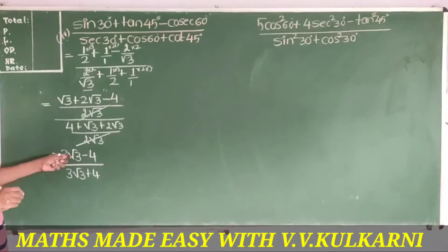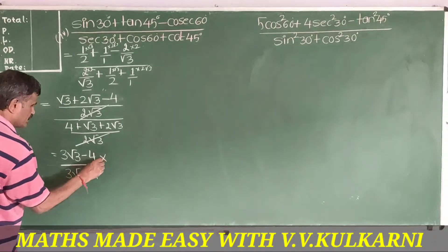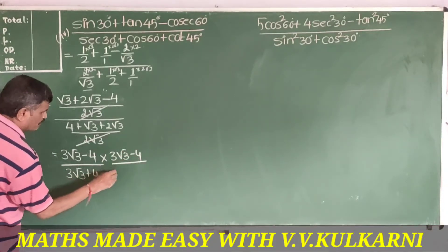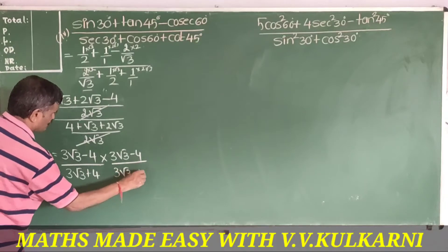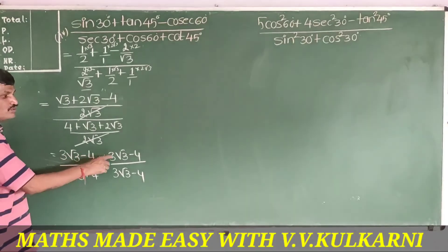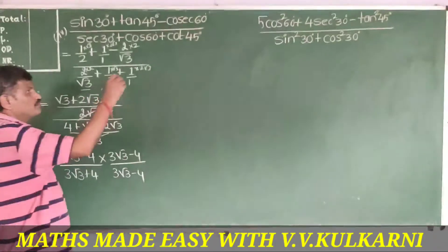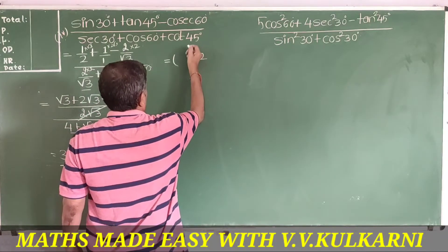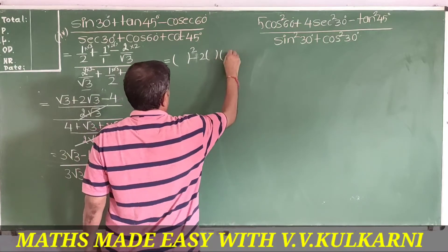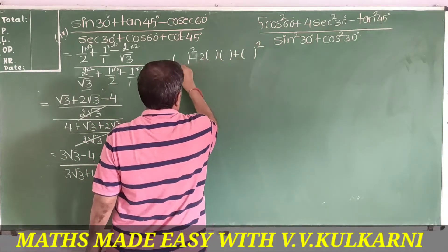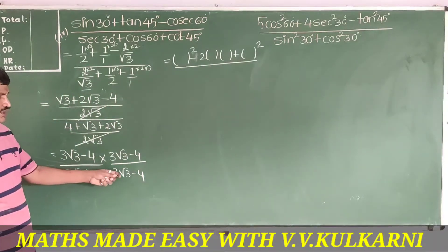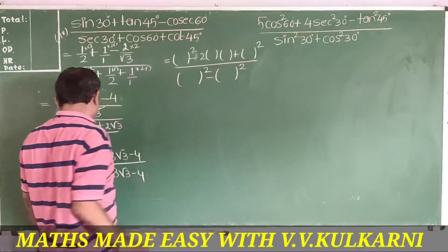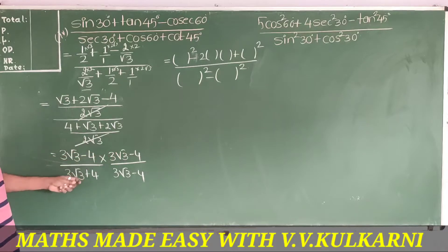Again you have to rationalize the denominator. To rationalize, you use the formula: for the numerator it is (a - b)² = a² - 2ab + b², and for the denominator you use the formula a² - b².